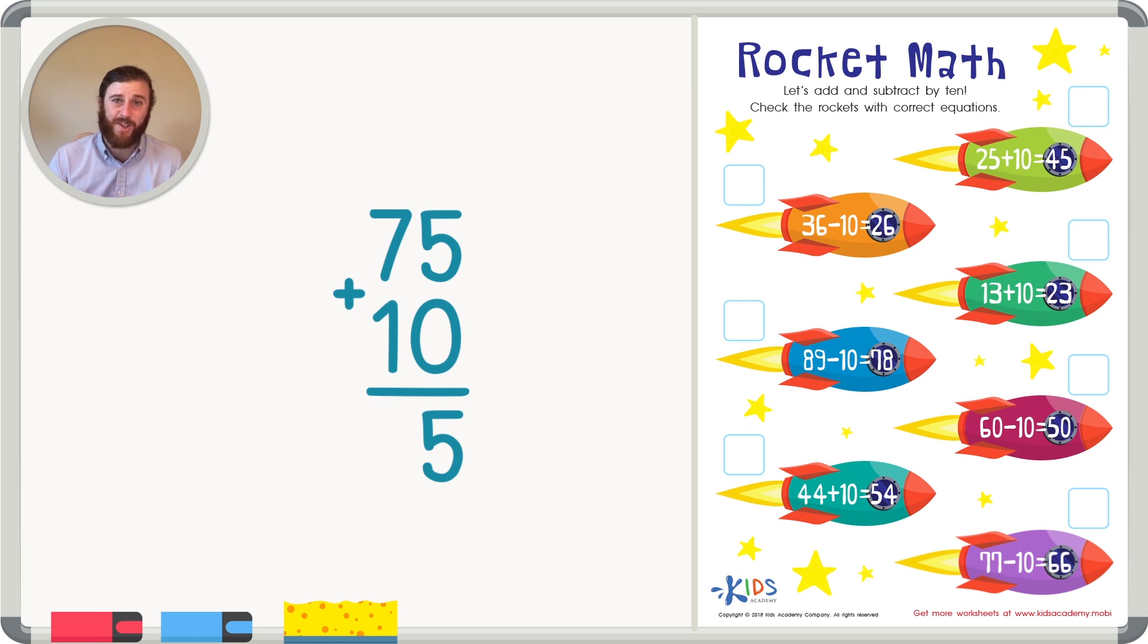Now if you add 7 plus 1, whenever you're adding a number to 1, it's always just the next number above it. So 7 plus 1 is just 8. So I know 75 plus 10 is 85.